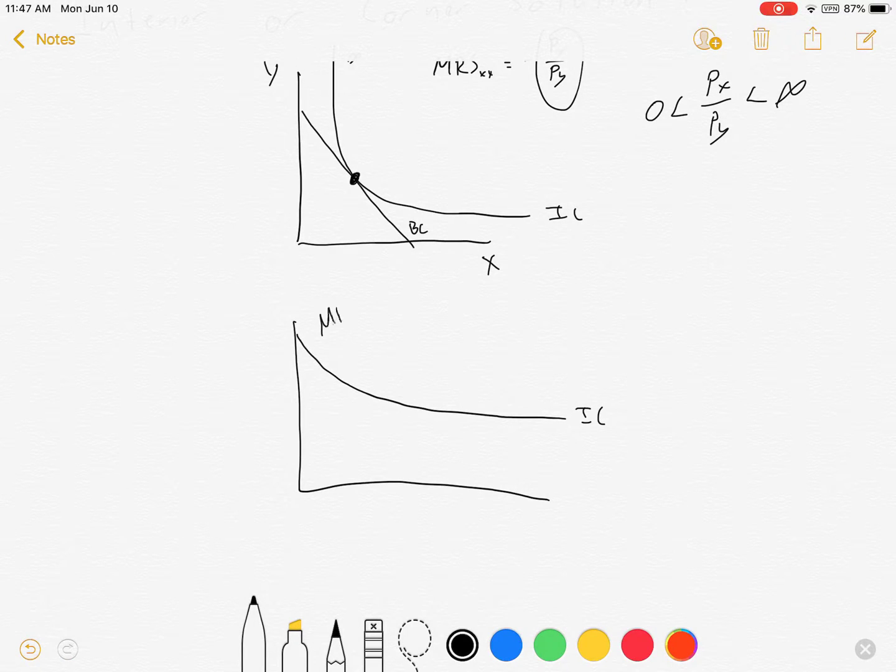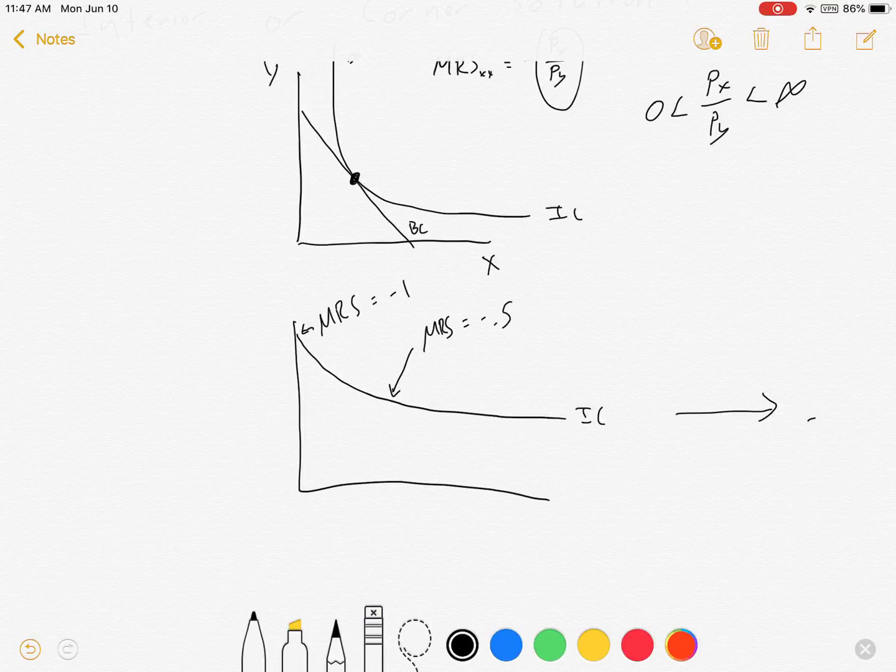Where the MRS over here, at the very tip, is negative 1, and the MRS here is minus 0.5. And then, as you went infinitely out this way, it would still approach, not infinity, it would still approach 0 as you go far enough out that direction.